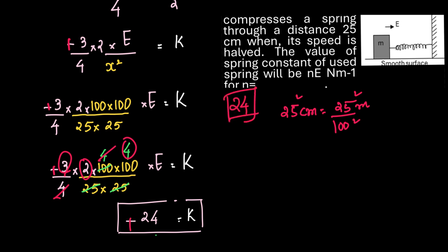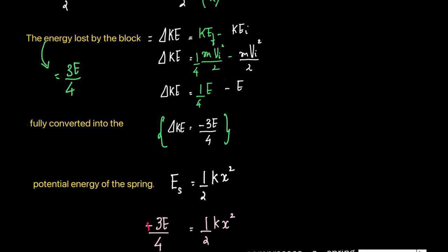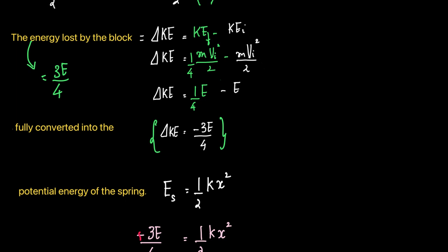The value of k equals 24E. The primary concept here is that the energy lost by the block is fully converted into the potential energy of the spring. You can also try solving this question using the law of conservation of mechanical energy. If you have any query, please feel free to write back.